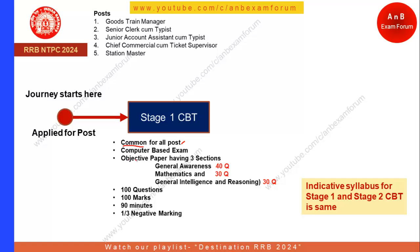Stage 1 CBT is an objective paper having three sections and it will be a computer-based test — not an OMR sheet based exam. The question paper will be 100 marks with 100 questions. The bifurcation is: General Awareness — 40 questions, Mathematics — 30 questions, and General Intelligence and Reasoning — 30 questions. One important thing: General Awareness consists of both static as well as current affairs. The time duration is 90 minutes.